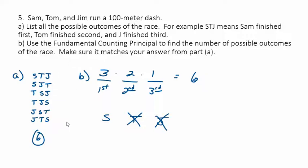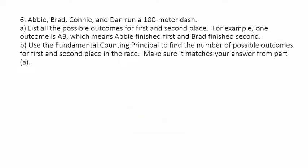The fundamental counting principle tells us there are six possible outcomes for the race, and listing them confirms those six outcomes. Now let's expand it a bit. Abby, Brad, Connie, and Dan run a 100-meter dash. List all the possible outcomes for just first and second — that's all we care about. One outcome is AB, meaning Abby first and then Brad.